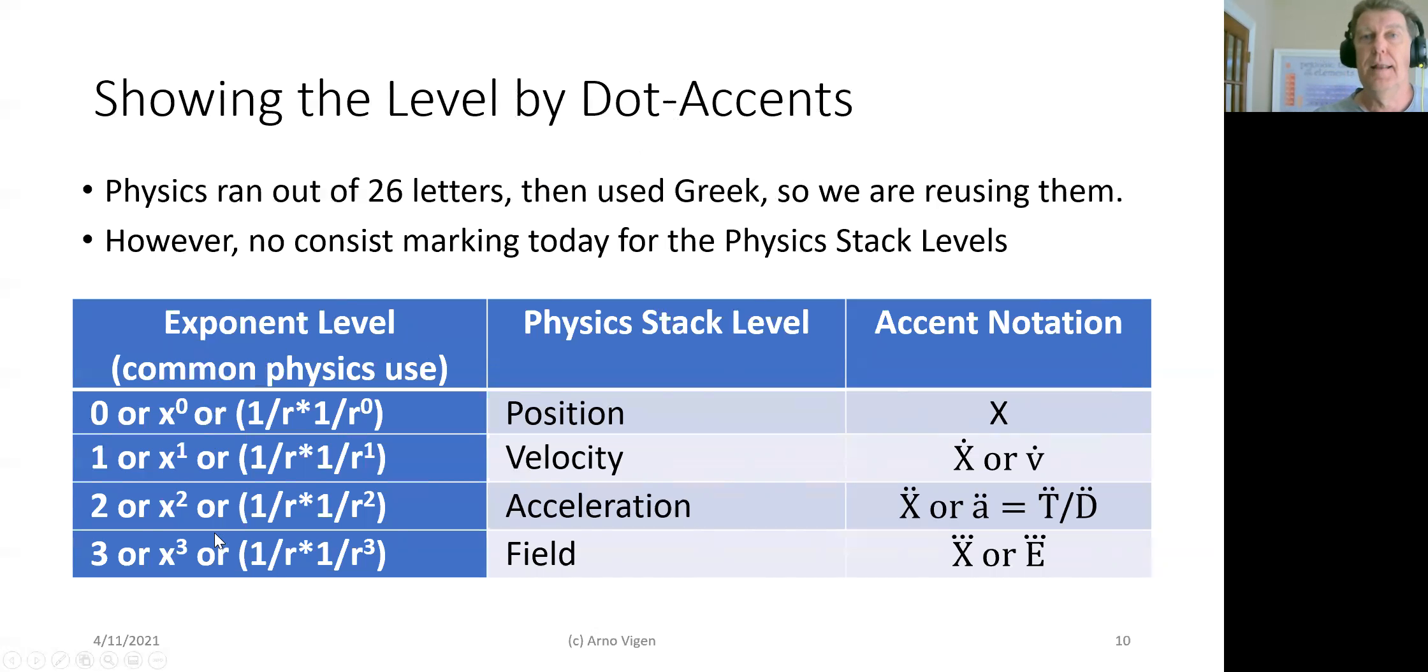So now you can go from position, velocity, acceleration, and the ether. One dot for velocity, two dots, and three dots. It's all very simple.